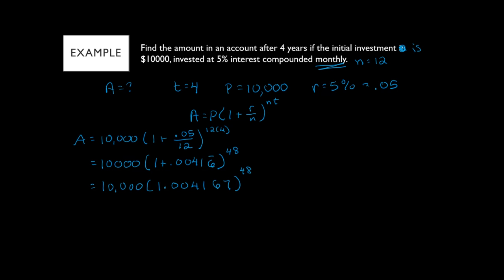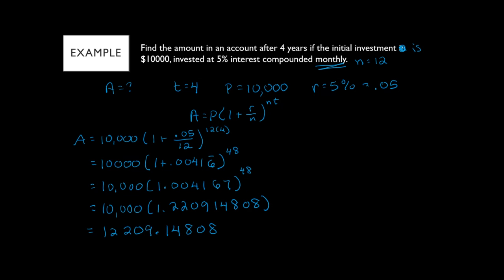So we have 10,000 times 1.00416... to the 48th power, which equals 10,000 times 1.220914808, giving us 12,209.14808. Since this is money we round to two decimal places — the digit after is eight so we round up — giving us $12,209.15.